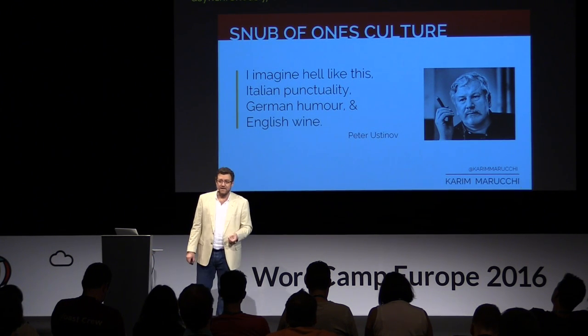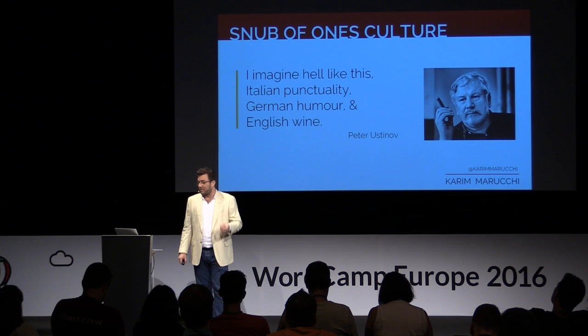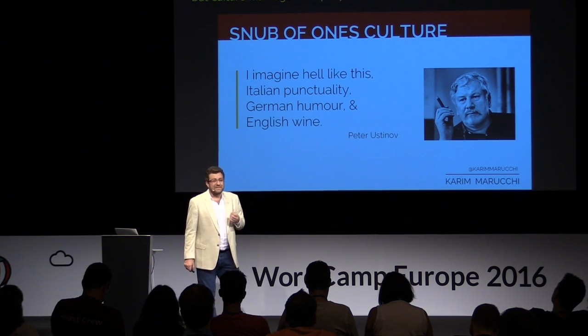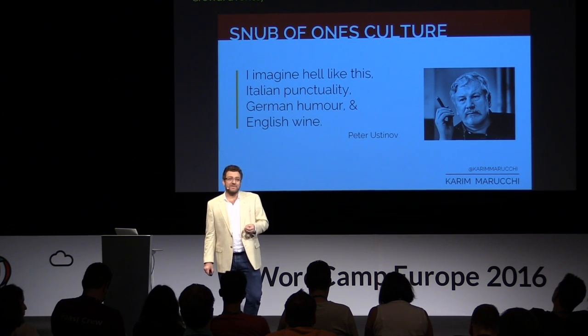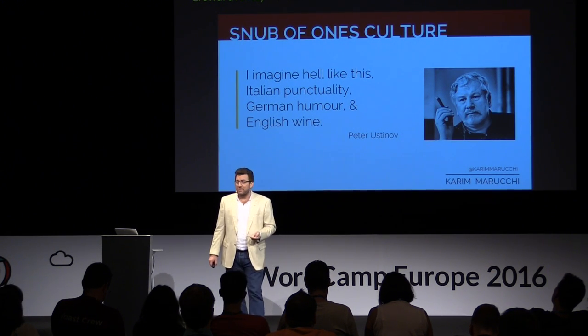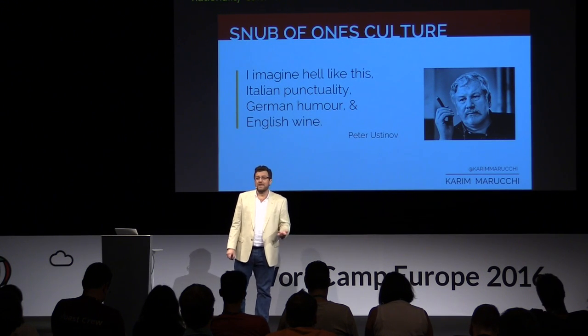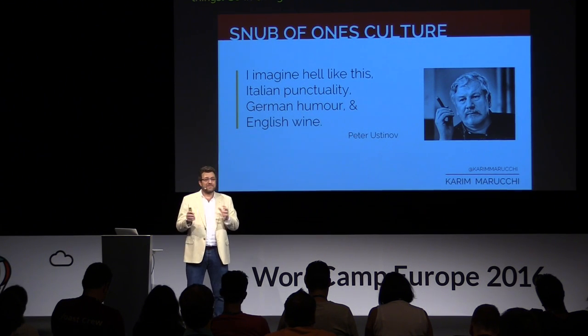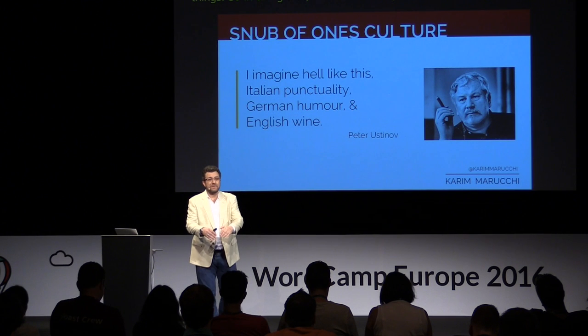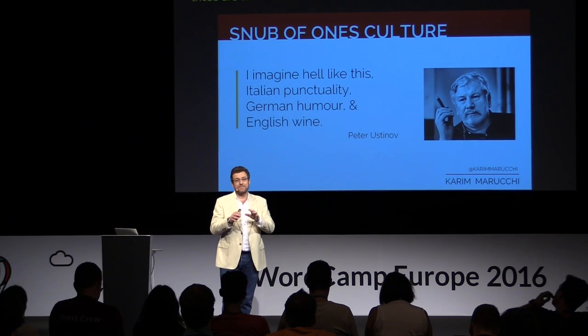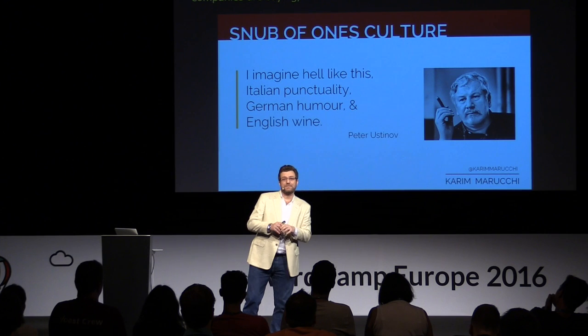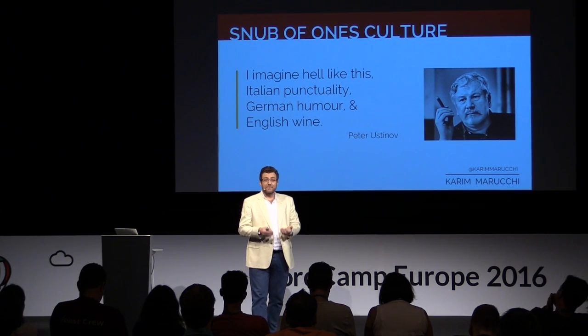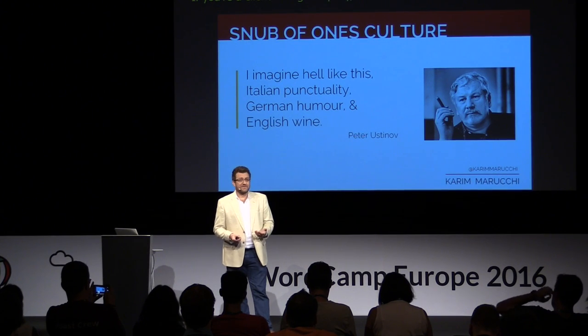Companies like Automattic, HumanMade, and CrowdFavorite spend an inordinate amount of time developing their culture to make up for the differences in nationality culture, time zone culture, and upbringing. But those are all inbound ways of looking at culture — how do I deal with the culture inside my company? If you're a client-facing company, you have clients that are from different cultures. So let's first take a look at nationality.